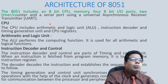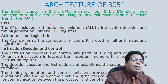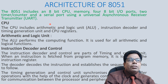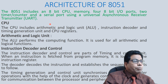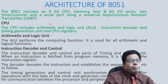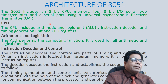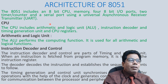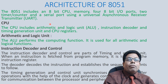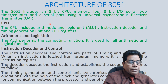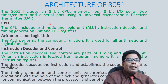The 8051 includes an 8-bit CPU, four 8-bit I/O ports, two timer counters, and a serial port using UART. The CPU includes the Arithmetic and Logic Unit (ALU), an instruction decoder, a timing generation unit, and CPU registers. The ALU performs all arithmetic and logical functions. The instruction decoder and control are parts of the timing and control unit.